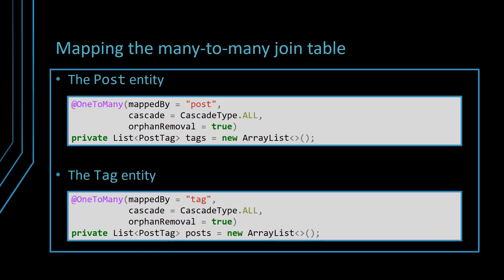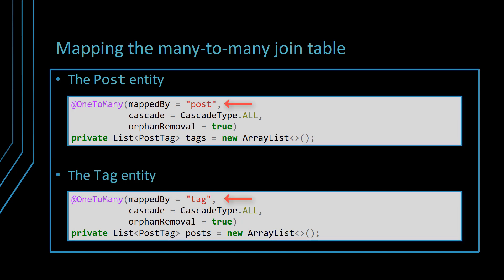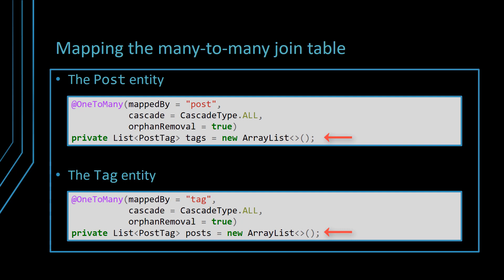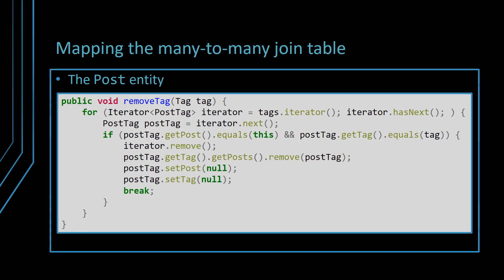Now, the post and tag entities will no longer use the @ManyToMany JPA annotation. Instead, the relationship is mapped as a bidirectional one-to-many JPA association. Notice the use of the mappedBy attribute, which tells Hibernate that the many-to-one side on the PostTag entity is in charge of controlling the JPA association. So, the post entity will no longer contain a collection of tag entities, but a collection of PostTags. The same goes for the tag entity. Unlike a many-to-many JPA association, we can now use cascade type ALL, since the cascade operation goes to the PostTag child entity and not to the other parent entity. The same is true for the orphan removal attribute. Since this relationship is now formed out of two bidirectional one-to-many associations, the use of add and remove utility methods is highly recommended.